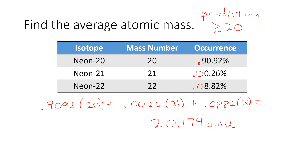If you go and look at the standard periodic table, you're going to find that this is right on the money for the average atomic mass of neon. It might be rounded to a different spot — like it might say 20.18 — but it should be very, very close to what the periodic table says.